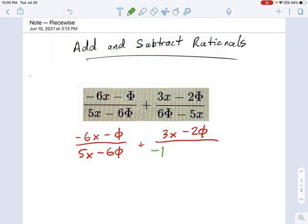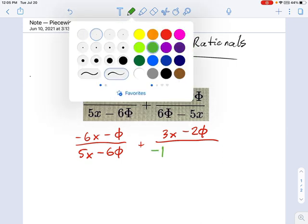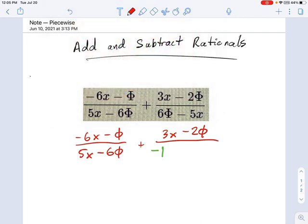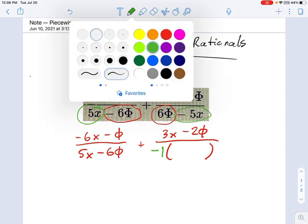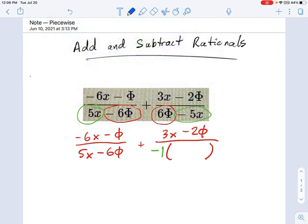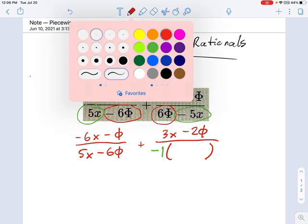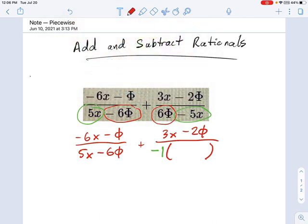Humor me now. Factor out a negative 1. And the reason I'm choosing a negative 1 here is because I suspect there's something going on that is really simple if we can see the trick. See this negative 6 phi? It's a positive 6 phi over here. And if you look at the other one, it's a 5x on this side and a negative 5x over here. Well it looks to me like they're only off from each other by a factor of negative 1. So let's go ahead and try to factor that out.